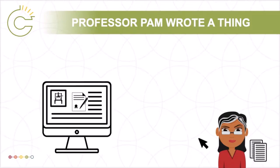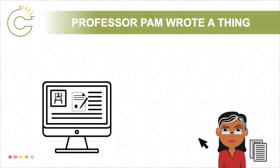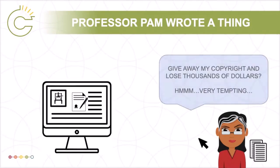If the paper is accepted for publication, this agreement will require her to transfer her rights in the work to the publisher. The automated form also suggests that publishing open access will cost her $3,000. Pam doesn't have $3,000 to spend on sharing her article and isn't sure how to interpret the language in the publishing agreement.